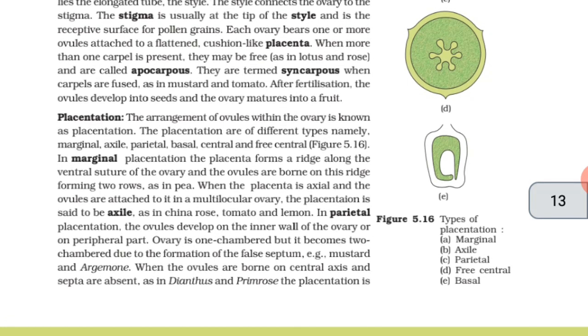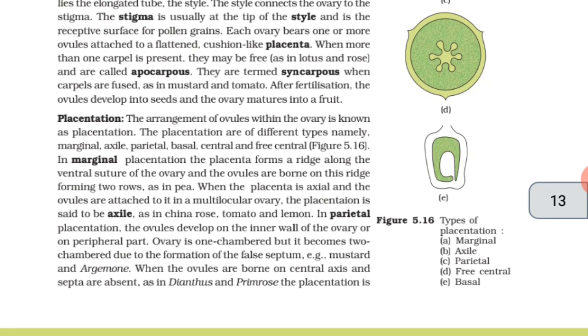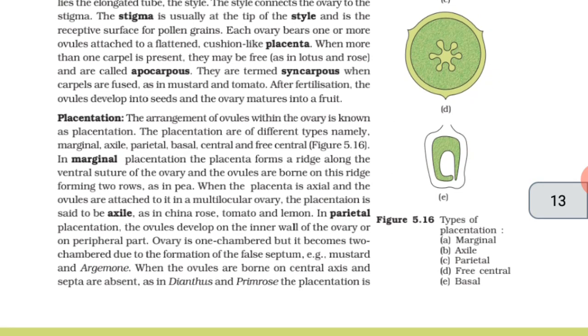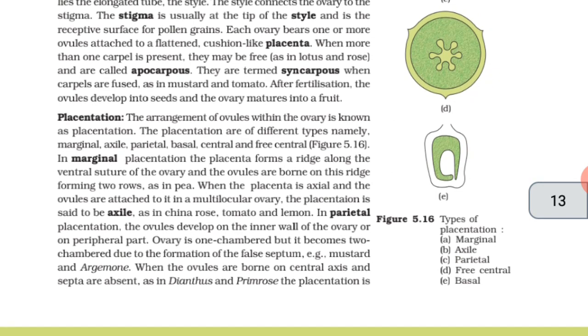In parietal placentation, the ovules develop on the inner wall of the ovary or on peripheral parts. Ovary is one-chambered but it becomes two-chambered due to the formation of the false septum, for example mustard and argemone.